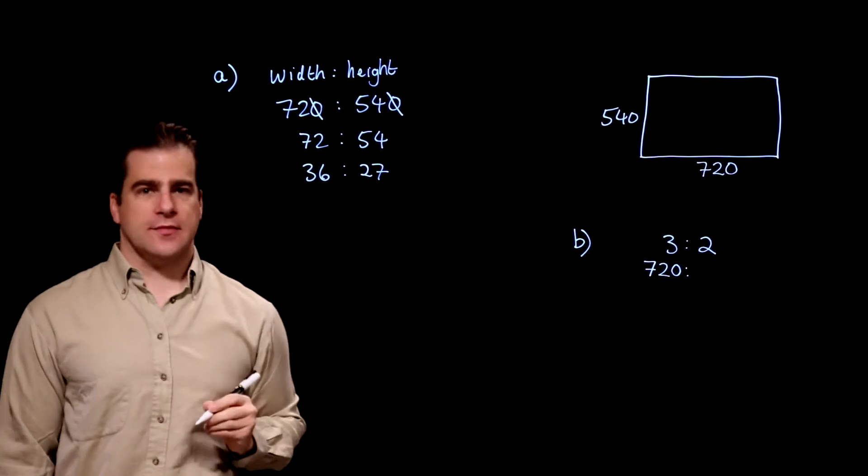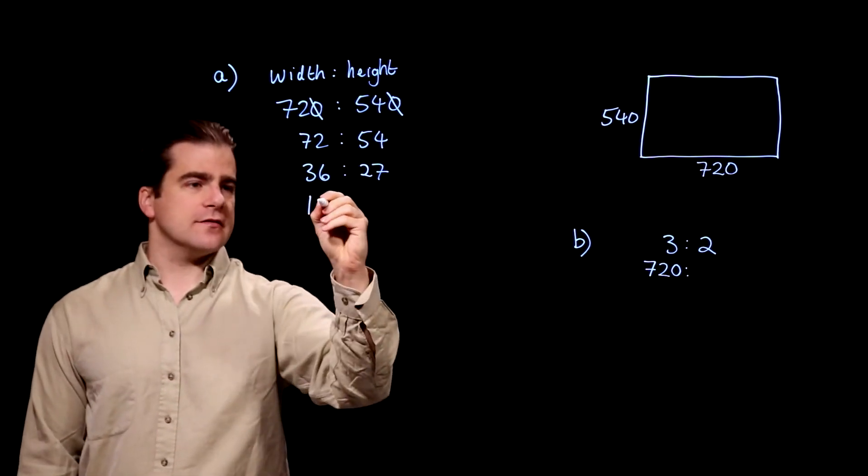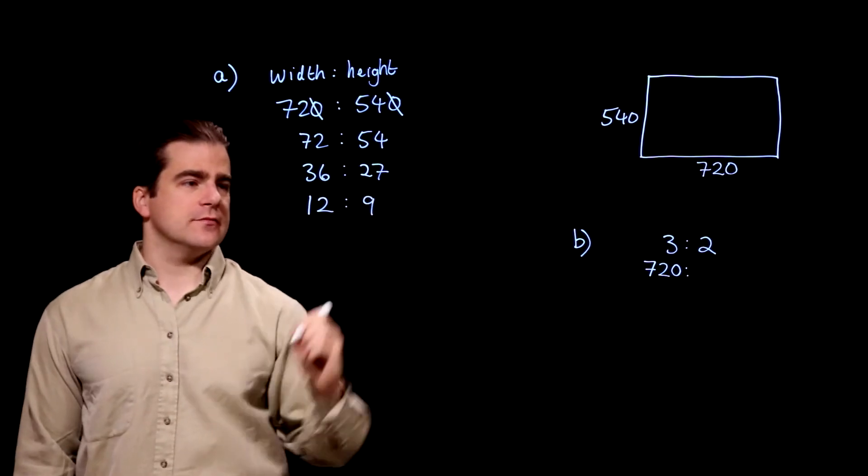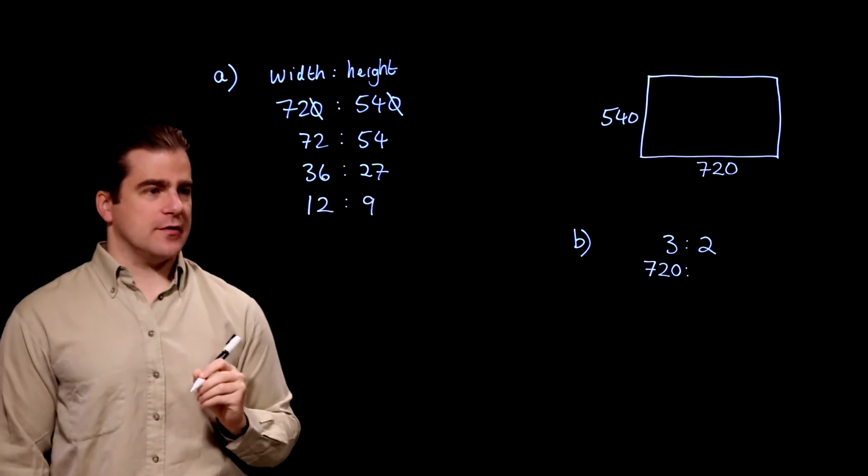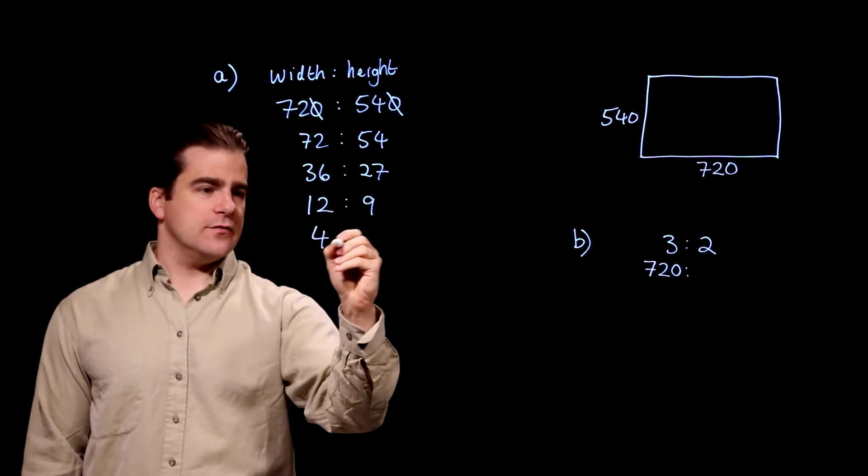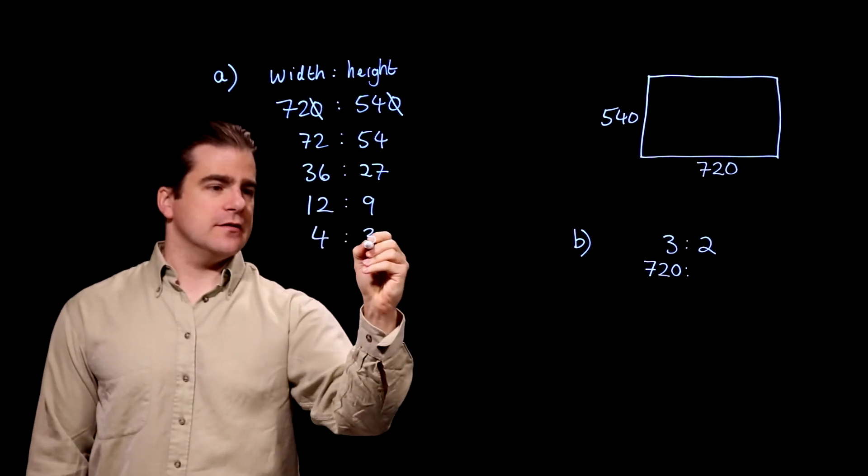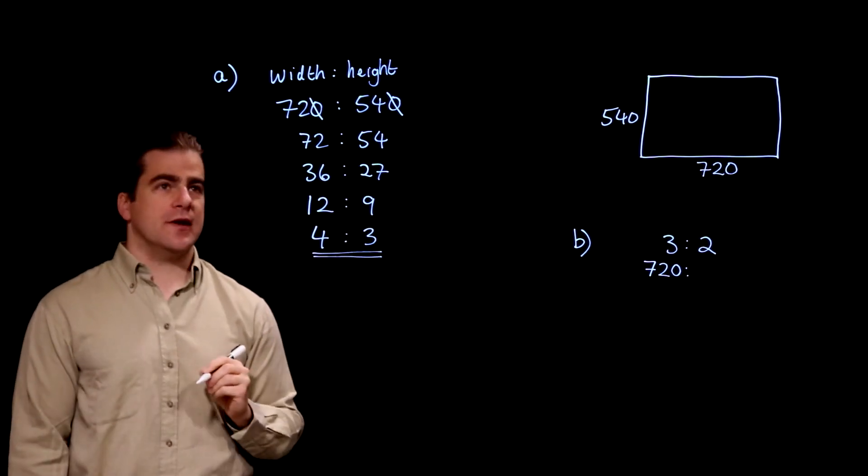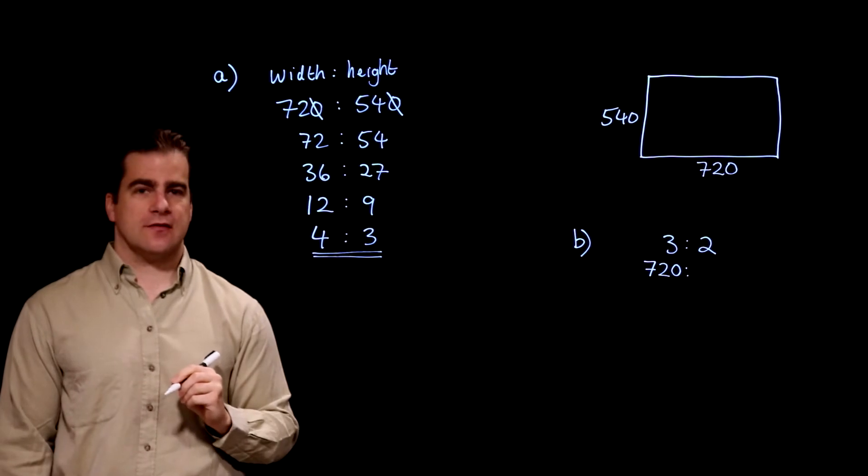Can we divide by 3? Yes, we can. 3 into 36 goes 12. 3 into 27 goes 9. Even odd. Can't divide by 2, but they are divisible by 3. 4 and 3. There we go. That's the simplest ratio of the width to the height.